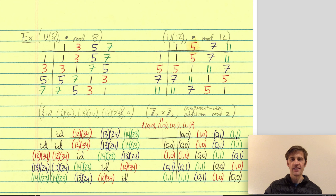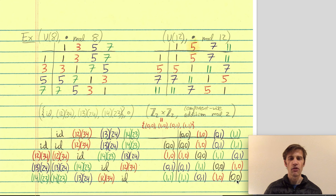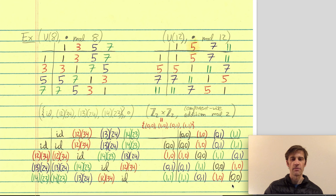For example, adding (0,1) to (1,1): add the first coordinates, 0 plus 1 is 1, then add the second coordinates, 1 plus 1 is 2, but mod 2 that's 0, giving (1,0). Another example: (1,1) plus (1,1) is (2,2), which mod 2 is (0,0). These four groups have the same structure in their Cayley tables — all have a black and red checkerboard on the top left and bottom right, and a green and blue checkerboard on the bottom left and top right. I call this the checkerboard pattern.